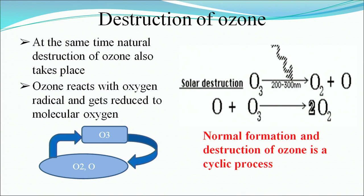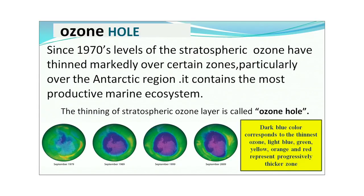Since 1970, levels of stratospheric ozone have thinned markedly over certain zones, particularly over the Antarctic region, which contains the most productive marine ecosystem. Four satellite pictures on screen, ranging from 1979 to 1989 to 1999 to 2009, show the gradual disappearance of the normal ozone depicted by orange and red color. In the latest image it is almost entirely blue, showing the thinnest layer of ozone.